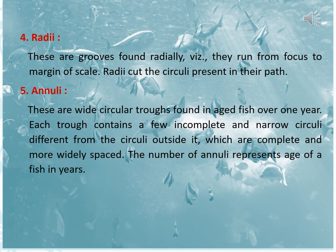The fourth structure is radii — grooves found radially. They run from the focus to the margin of the scale and cut across the circuli present in their path. The fifth one is annuli. These annuli are white circular troughs found in aged fish. Over one year, each trough contains a few incomplete and narrow circuli, different from the circuli outside it, which are complete and more widely spaced. The number of annuli represents the age of a fish in years.